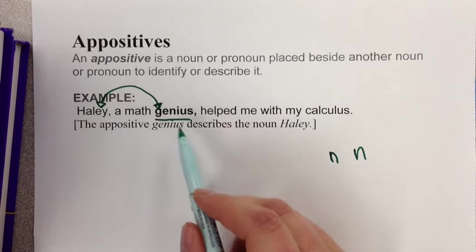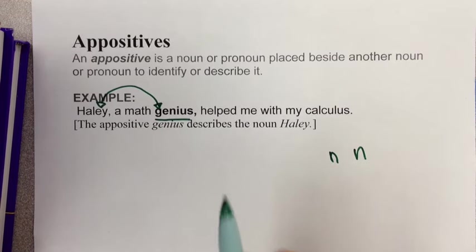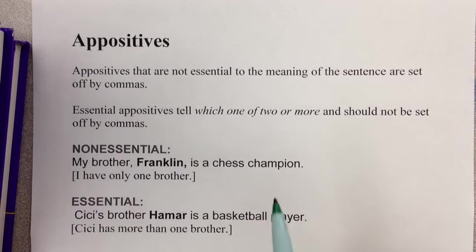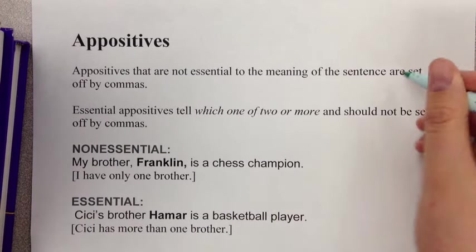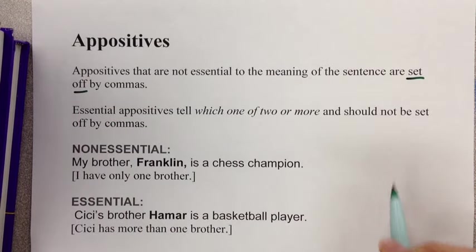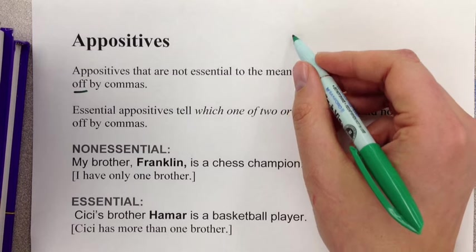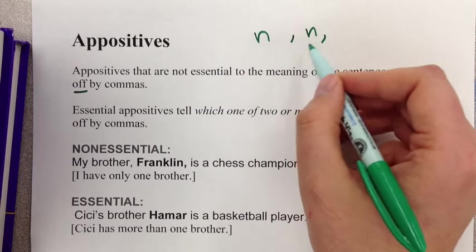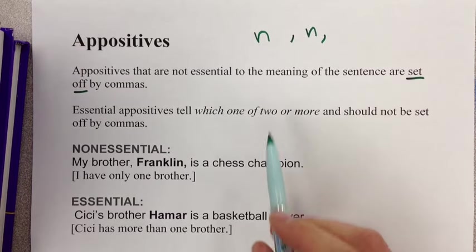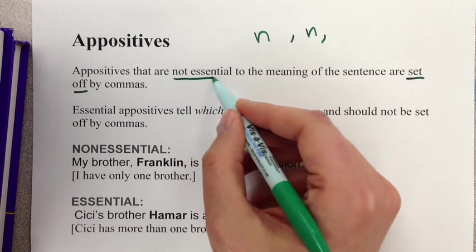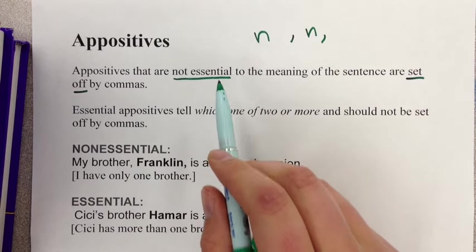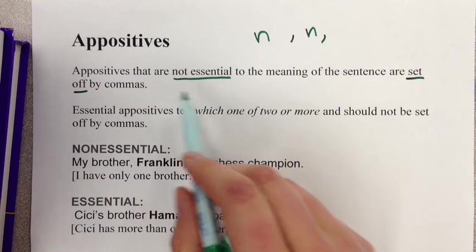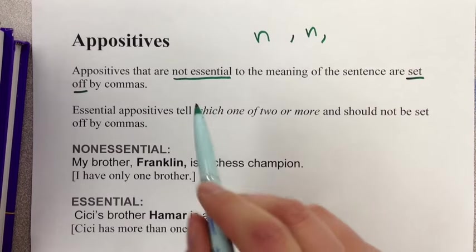A lot of appositives tend to have commas on both sides of them, but not all of them — be very careful. Appositives that are not essential to the meaning of the sentence are set off by commas, meaning there are commas on both sides of the second noun. Non-essential means you can delete it; it's not required for the sentence to make sense.